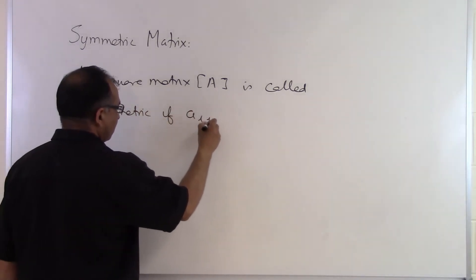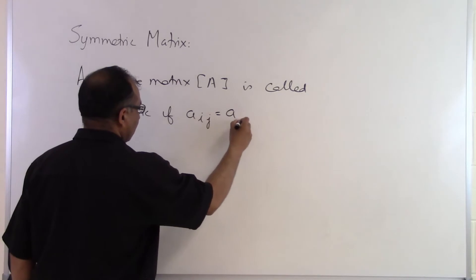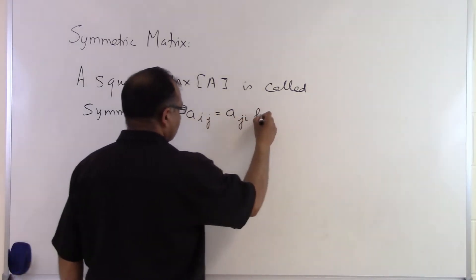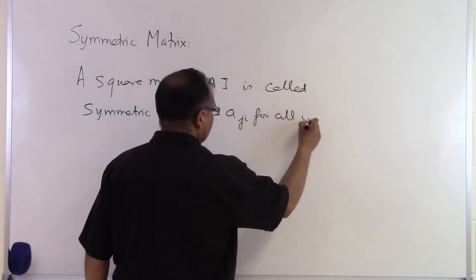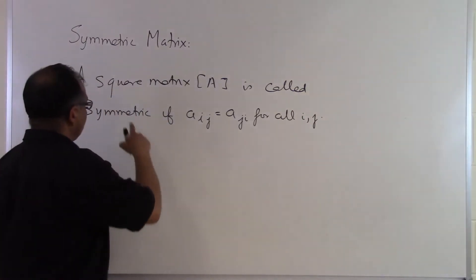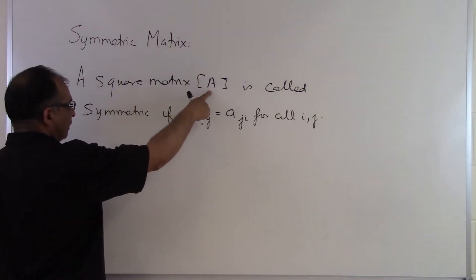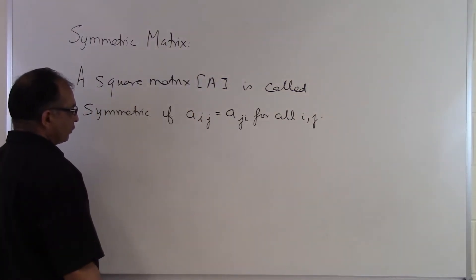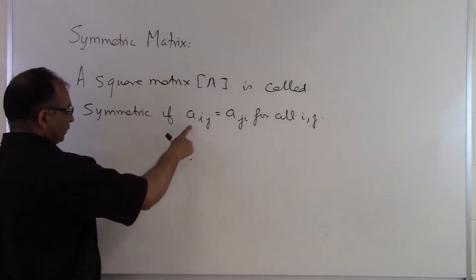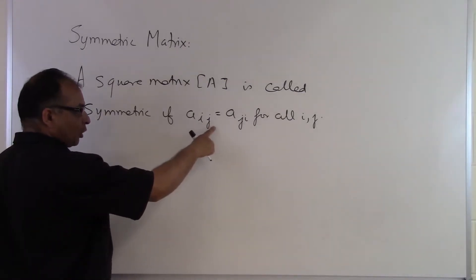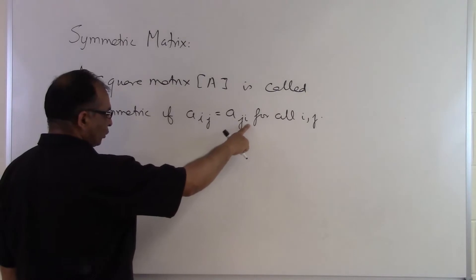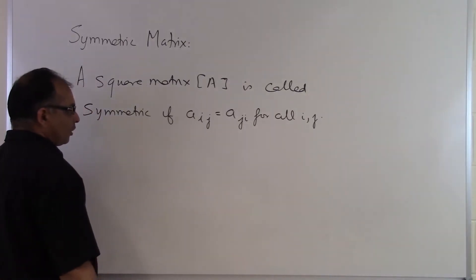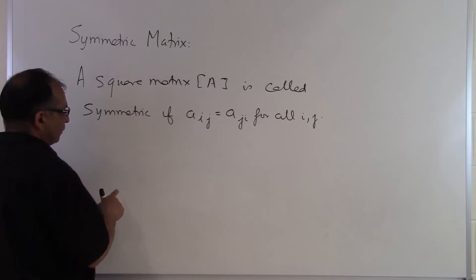if a_ij equals a_ji for all i,j. So the first thing which we have to understand is A is a square matrix, the same number of rows and the same number of columns. Then the ith row jth column has to be the same as the jth row ith column for all the values of i,j. So that's when we consider the matrix to be symmetric.